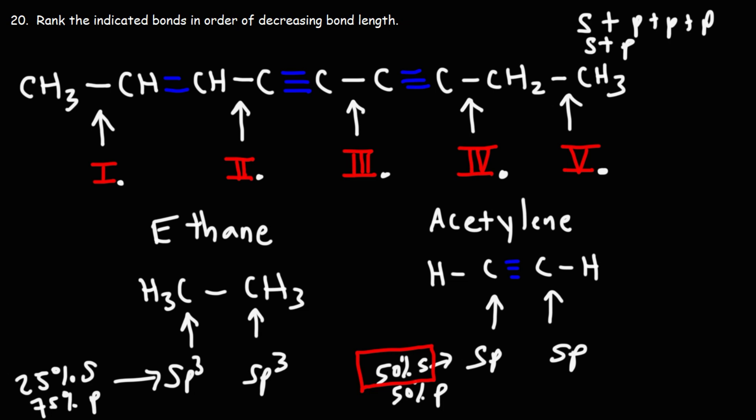The more s character there is, the shorter the bond is going to be, and the stronger the bond will be as well. Now, the reason is that the s orbital is closer to the nucleus than the p orbital. So that's why, as the s character increases, the bond strength will increase, but the bond length will decrease.